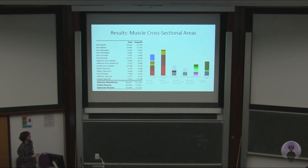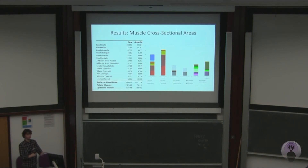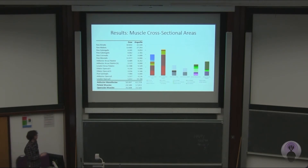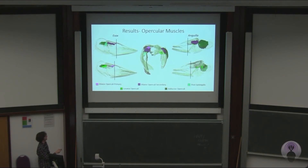Looking at the quantitative results: the muscles are colour-coded by group, matching the colours from the reconstructions, and are scaled to the same head length to correct for the size difference between species. You can see the adductor mandibuli in the eel is bigger than in the pike. The palatal muscles are bigger in the pike, and the opercular muscles in the pike are mostly bigger — but the levator operculae in the eel is absolutely huge, covering almost the entire lateral face of the opercular bone.